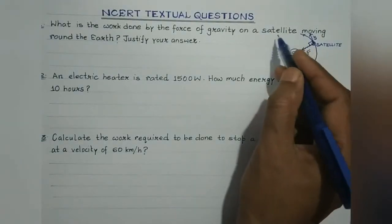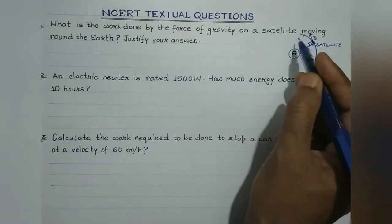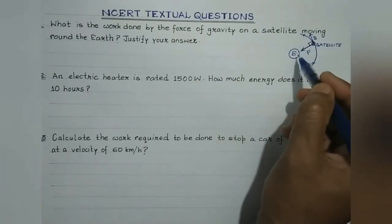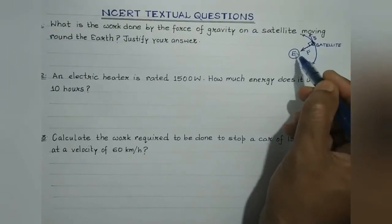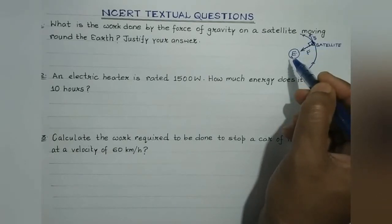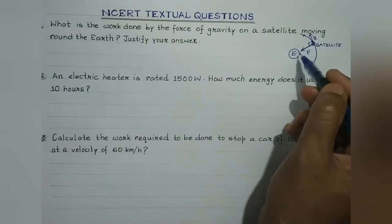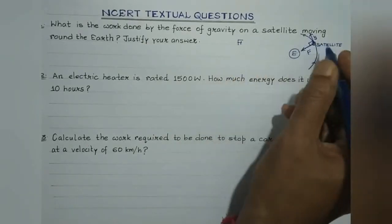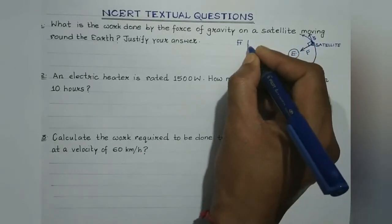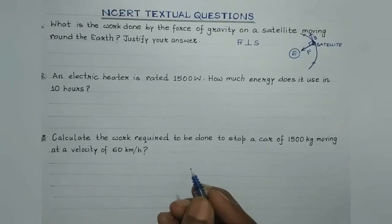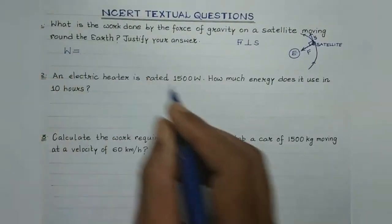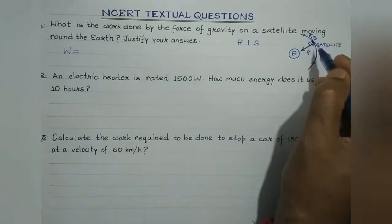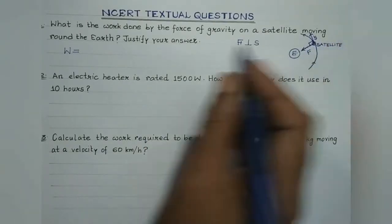When a satellite moves around the earth, its displacement in a short interval is along the tangent to the circular path. The gravitational force acting on the satellite due to the earth is along the radius, that is, in the radially inward direction. Since the tangent is always perpendicular to the radius, the displacement and the force are perpendicular to each other. Since work done is the product of force and displacement along the direction of force, and here the displacement is perpendicular to the force, work done would be zero.